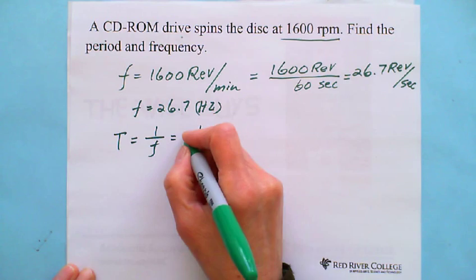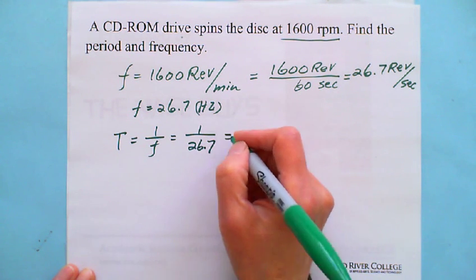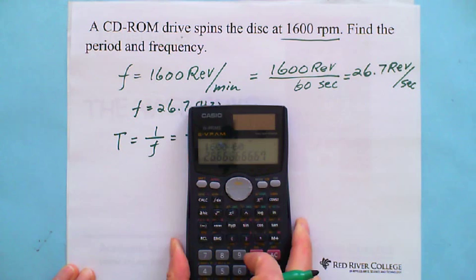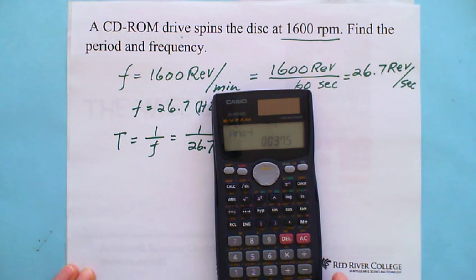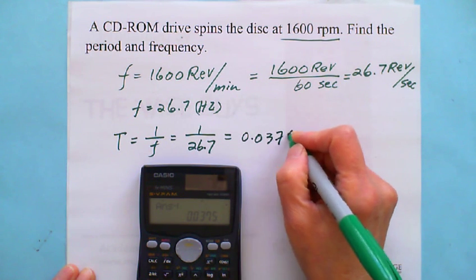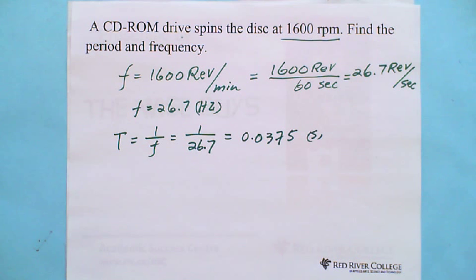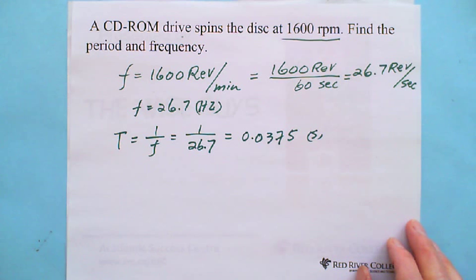We got 0.0375 seconds. So it takes only 0.0375 seconds to complete one revolution. So as over great, if this looks good, see we can see the checkout.